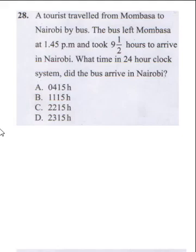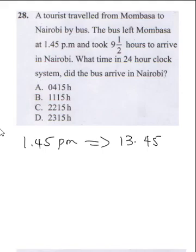Question 28 says the tourists traveled from Mombasa to Nairobi by bus. The bus left Mombasa at 1:45 PM and took 9 and a half hours to arrive in Nairobi. What time in the 24-hour clock system did the bus arrive in Nairobi? First, 1:45 PM is the same as 13:45 hours.